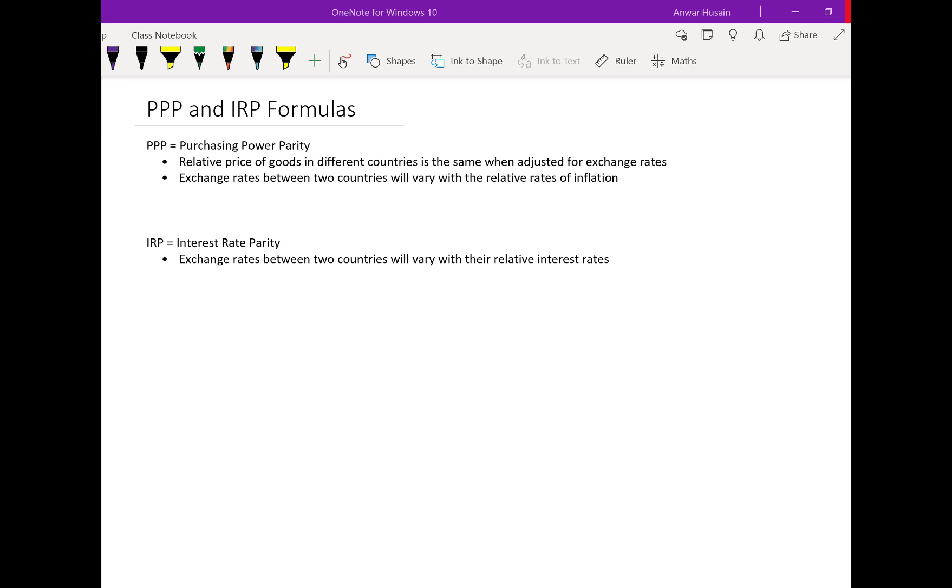Let's write out the formula for purchasing power parity. If you take one plus the inflation in the foreign country, divided by one plus the inflation in the home country, all to the power of t, that is going to equal the forward rate of the currency at time t over the spot rate of the currency, which is the exchange rate today.